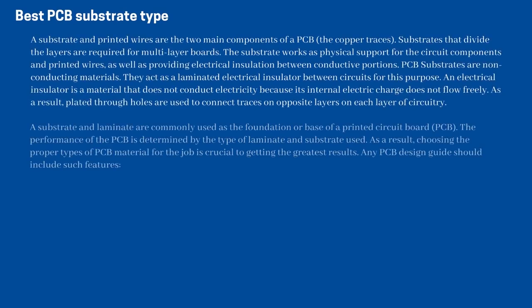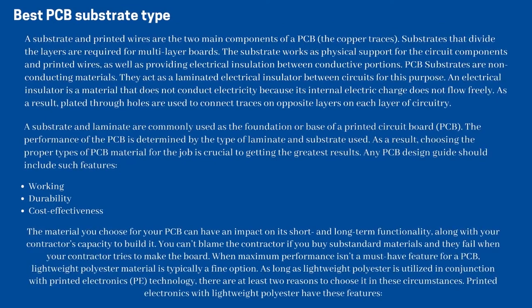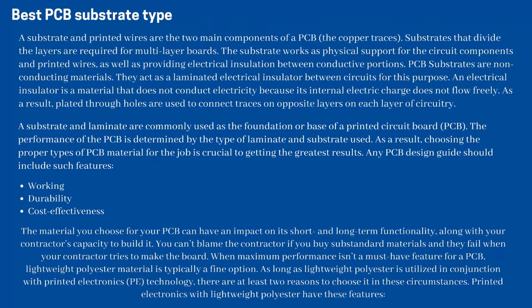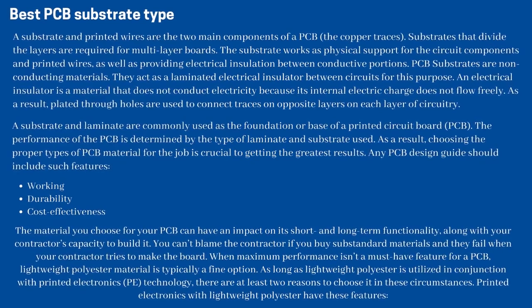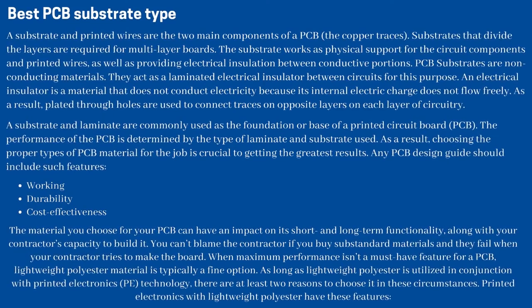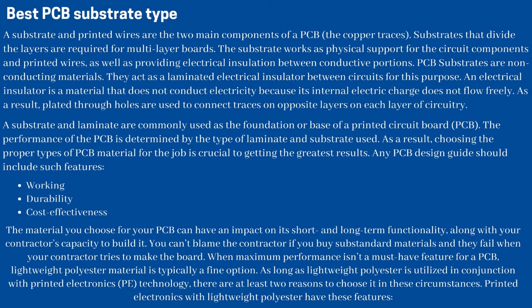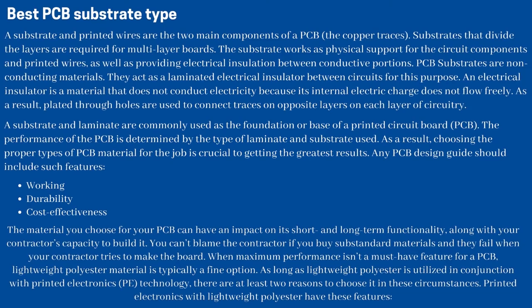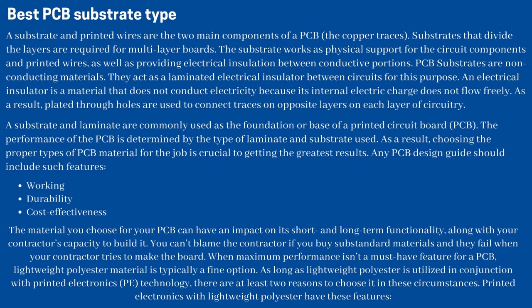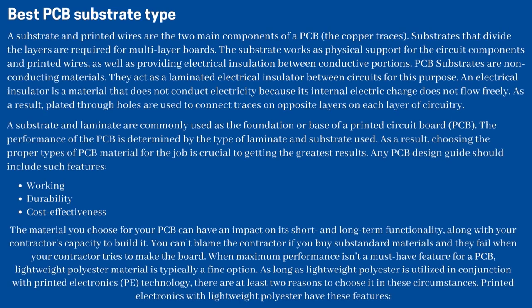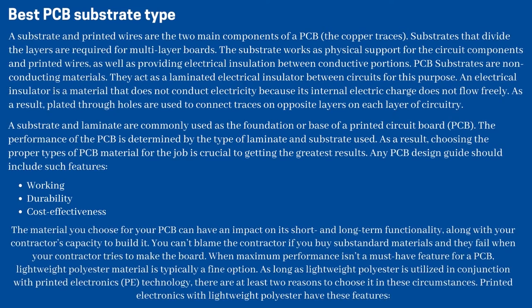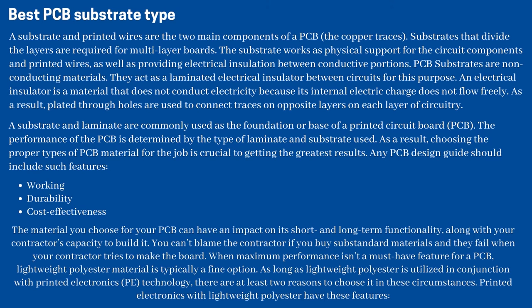A substrate and printed wires — the copper traces — are the two main components of a PCB. Substrates that divide the layers are required for multi-layer boards. The substrate works as physical support for the circuit components and printed wires, and provides electrical insulation between conductive portions. PCB substrates are non-conducting materials that act as laminated electrical insulators between circuits. An electrical insulator is a material that does not conduct electricity because its internal electric charge does not flow freely. As a result, plated through holes are used to connect traces on opposite layers.